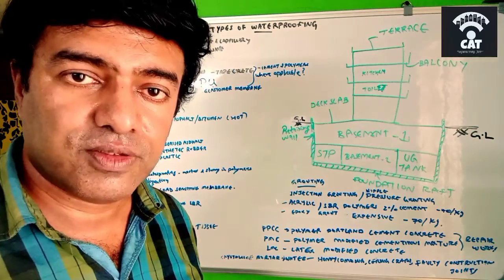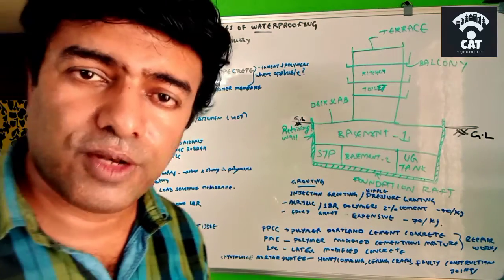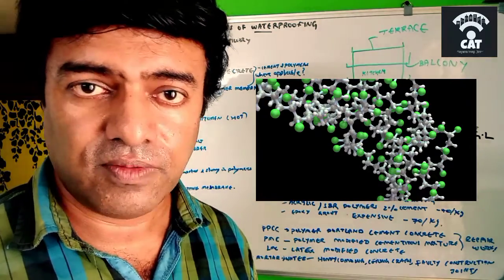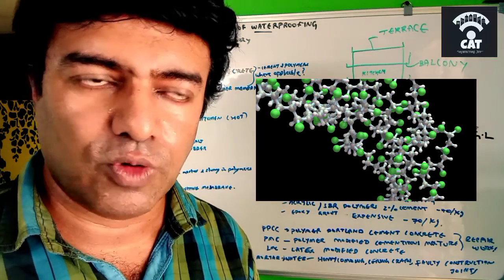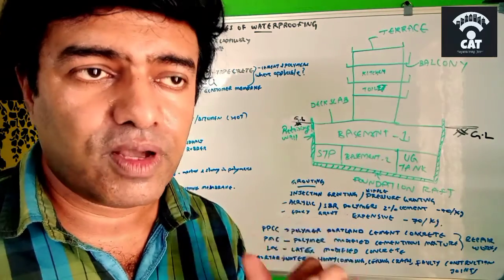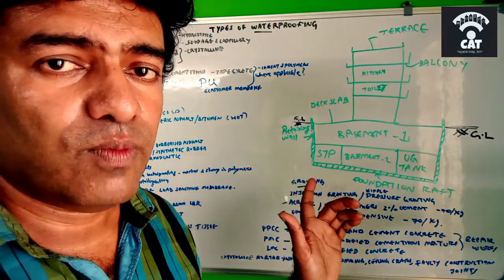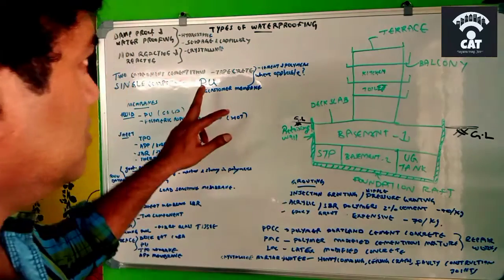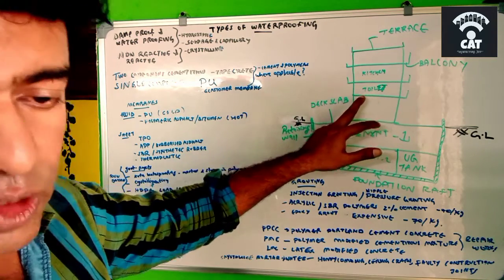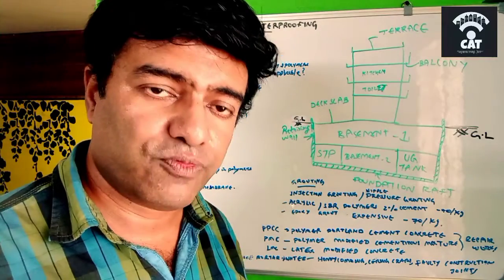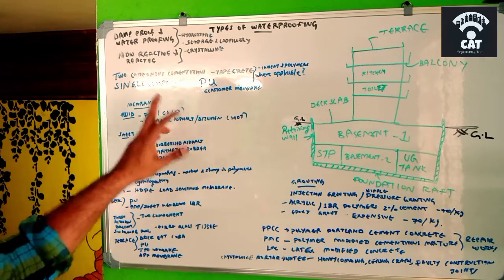In two-component cementitious material, one component is cement and the other is polymer. A key point to remember: polymer is essential for waterproofing — polymer equals waterproofing. This two-component polymer plus cement material, called taperit, is typically applied on kitchen slabs, toilet slabs, and similar areas as the primary waterproofing treatment.